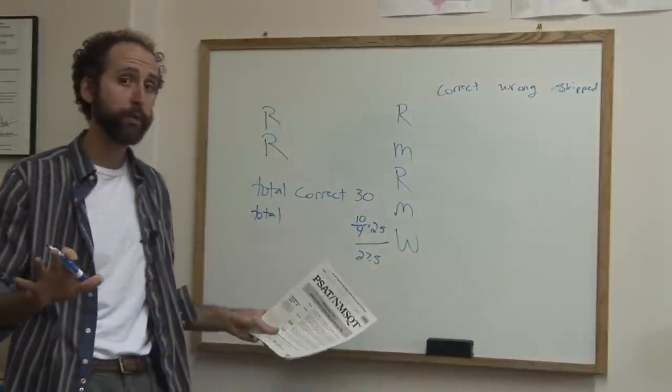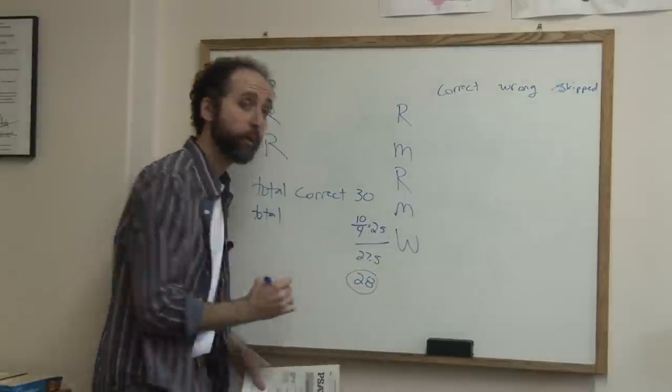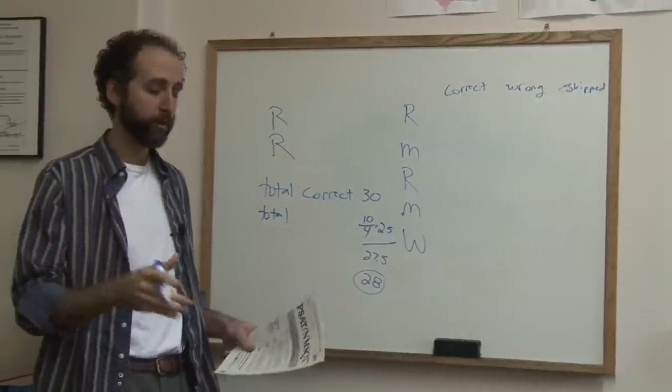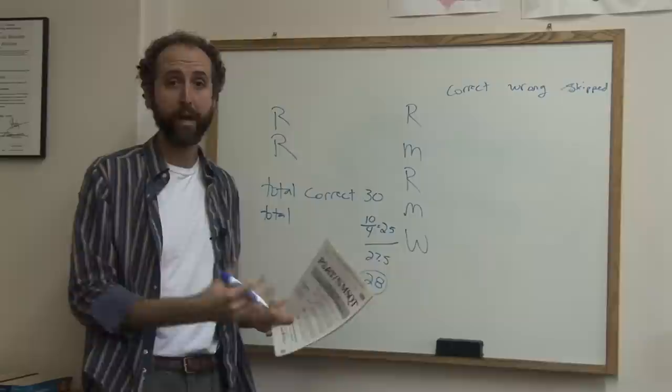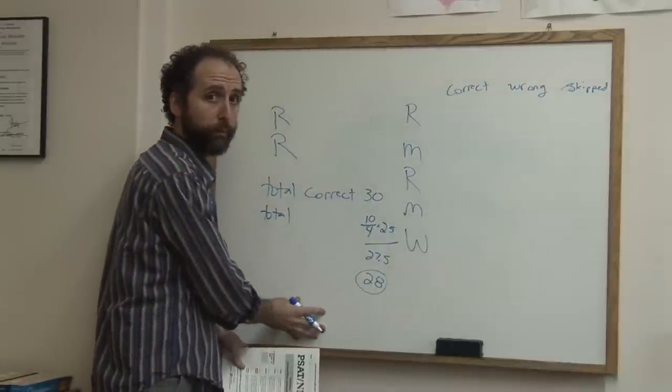Then just like normal decimals, you round up if it's 0.5 or over, so that's 28. That 28 is your raw score. You're then going to go into the scale sheet which the packet is going to give you on the PSAT, and you'll find out your PSAT score from the 28.